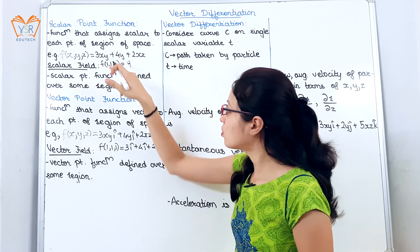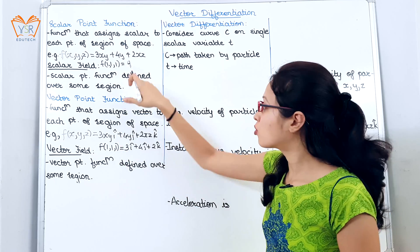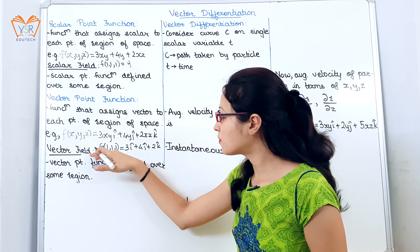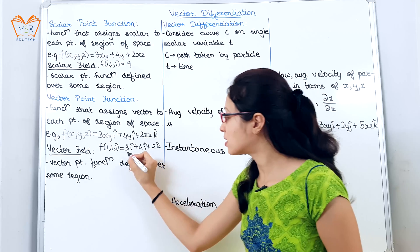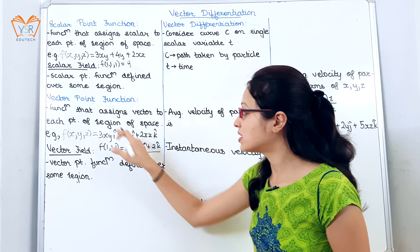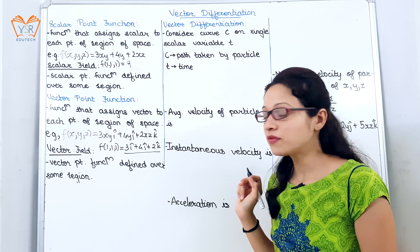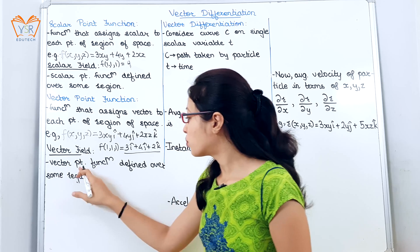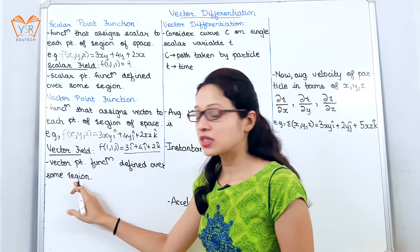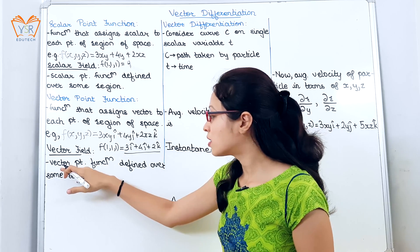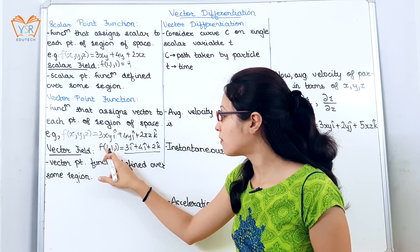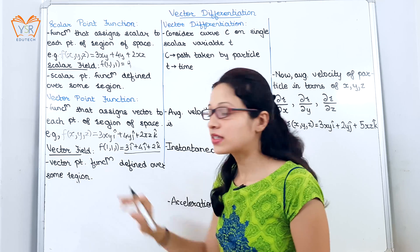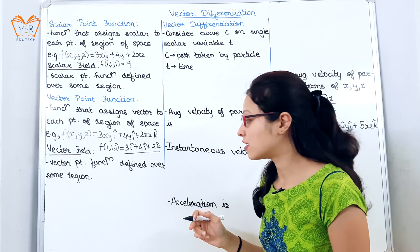Now if you compare both answers, the output of the scalar function was 9, which is a scalar quantity. The output of this function is a vector quantity, so we say that it is a vector point function — that is a vector field. A vector point function defined over some region means the space from where x, y, z are taken is the vector region or vector field.